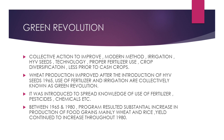The Green Revolution is a collection of actions to improve agriculture through modern methods, irrigation, high yielding variety seeds, technology, proper fertilizer use, crop diversification, and less priority to cash crops. This set of actions aimed to improve cultivation methods and technologies to advance the agriculture sector and make it better.